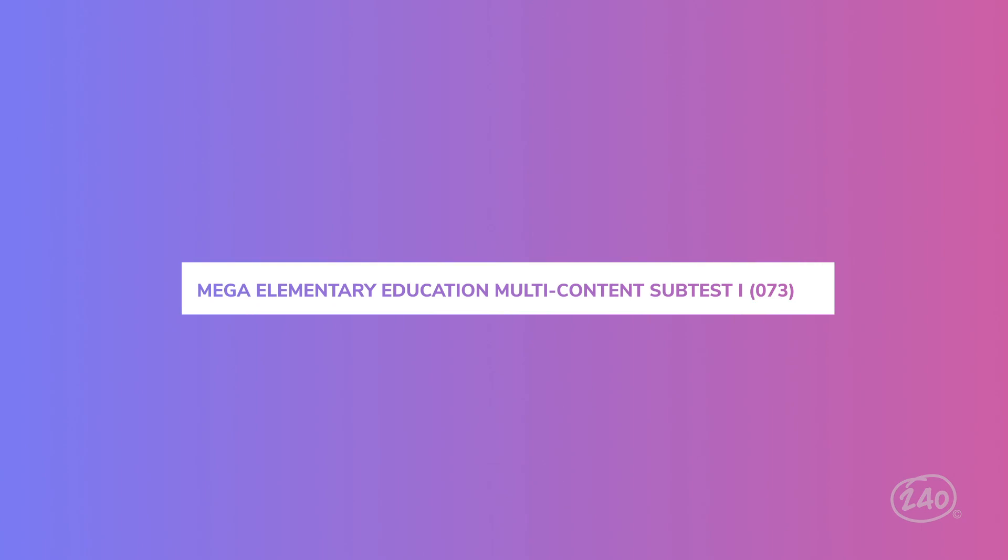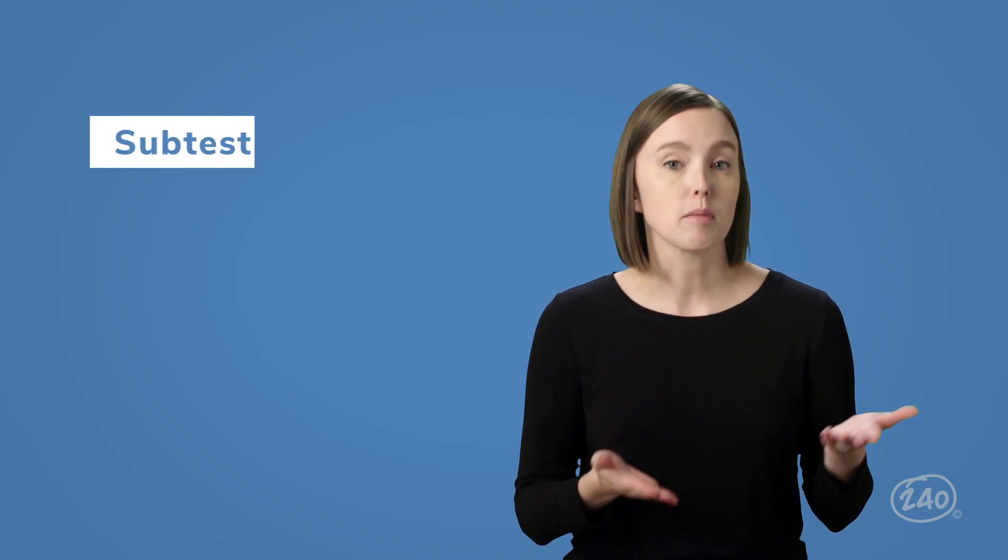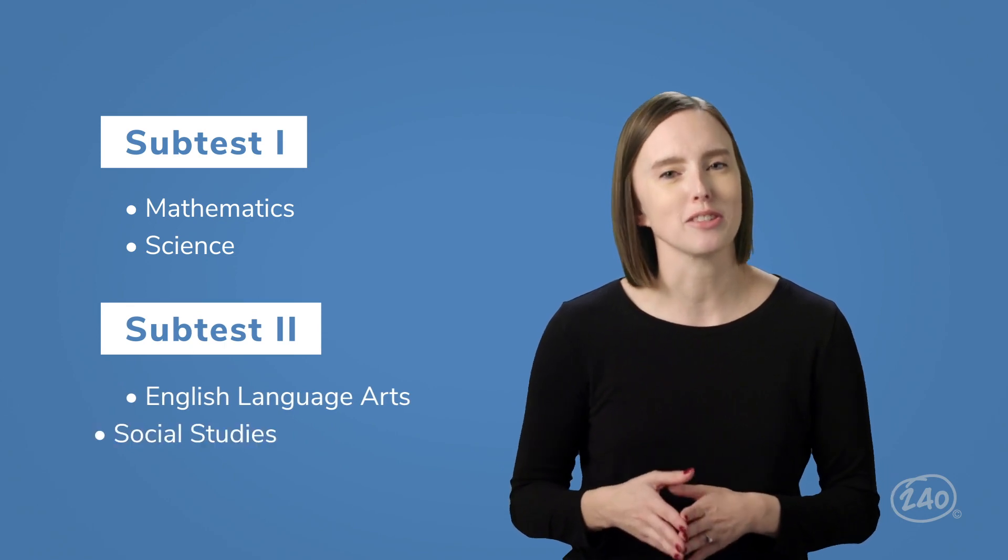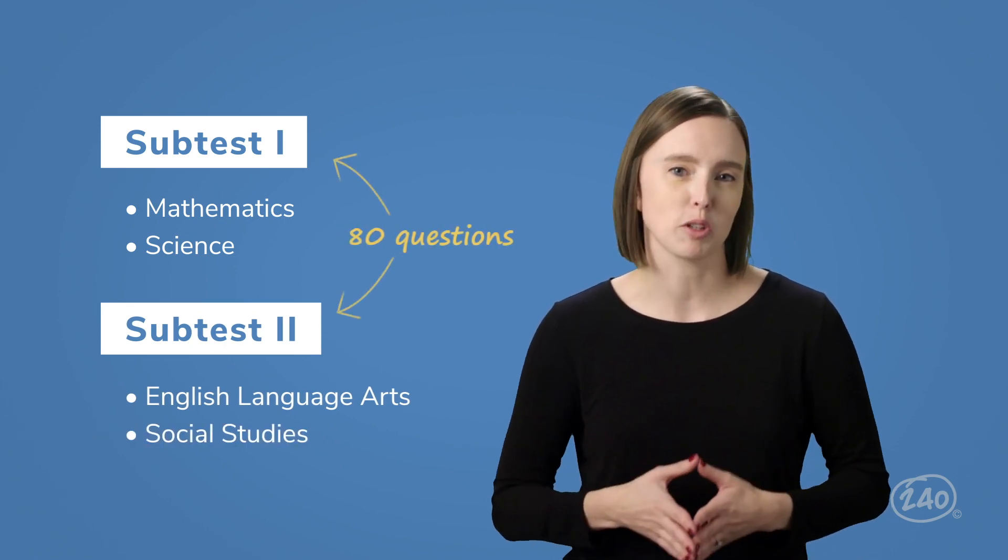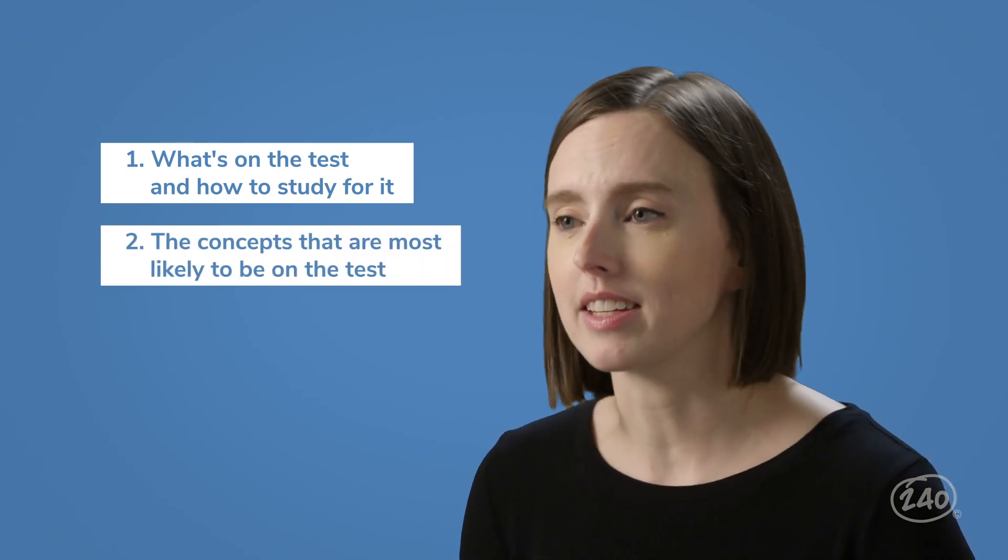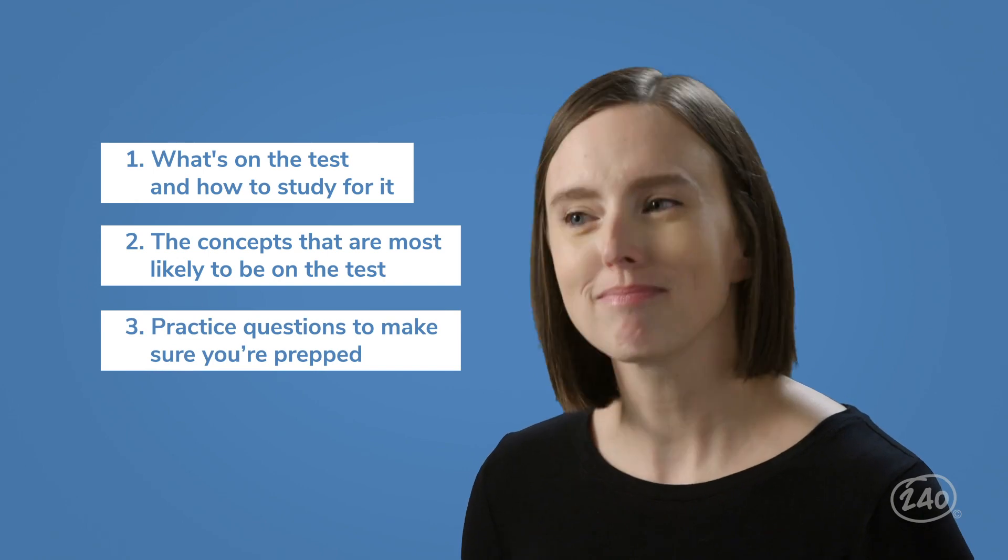This video is going to prepare you for subtest one of the MEGA Elementary Education Multi-Content Exam. MEGA stands for Missouri Educator Gateway Assessment and it's test code 073. The MEGA Elementary Education Multi-Content Exam is split into two subtests. Subtest one covers mathematics and science. Subtest two includes English language arts and social studies. Each contains approximately 80 multiple choice questions, but in this video we're only going to talk about subtest one and we're going to cover three things: what's on the test and how to study for it, the most likely concepts that will be on the test, and we're going to look at a few practice questions. Let's get to it.